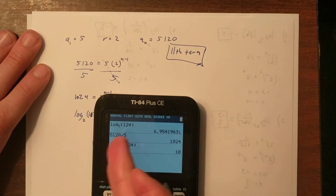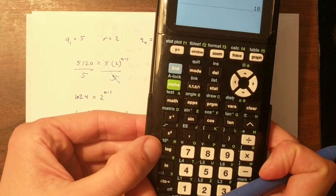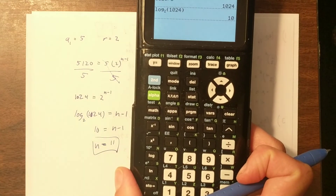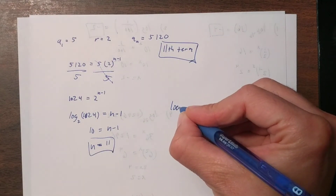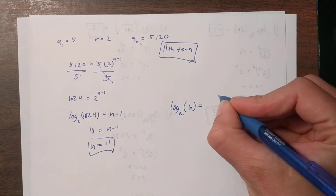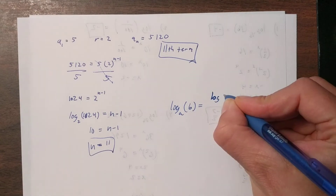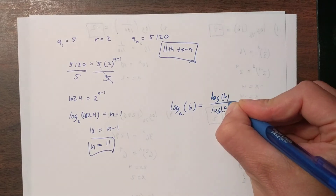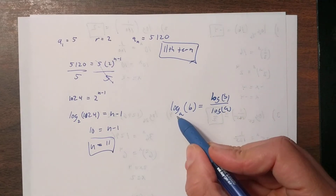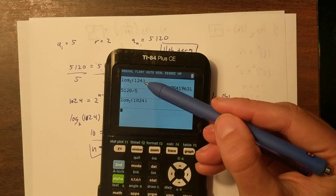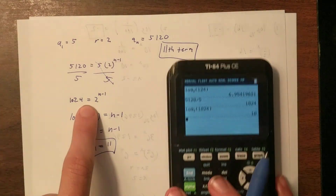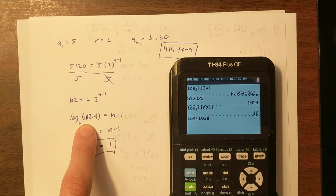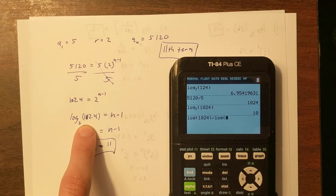But what if you only have a standard log button — base 10? You use the change of base formula: log base a of b equals log of b divided by log of a. So log base 2 of 1024 becomes log(1024) divided by log(2), which also equals 10 — the exact same answer. That's the change of base formula in action.